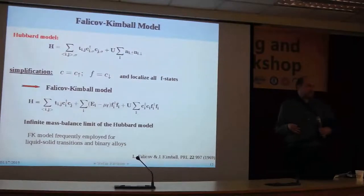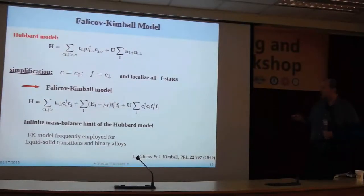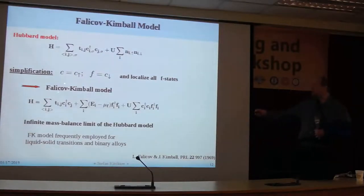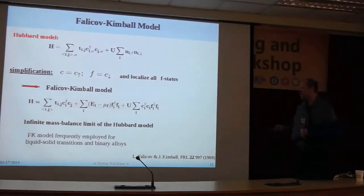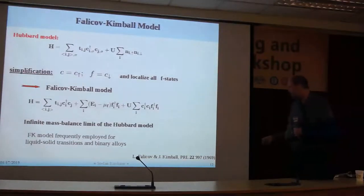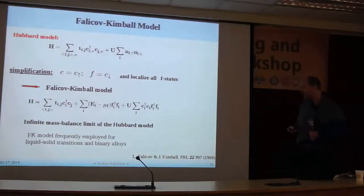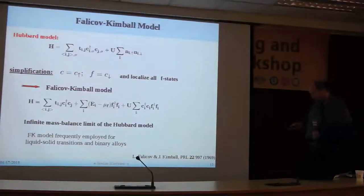I already mentioned the Falikov-Kimbell model — but what is this? If you start from the Hubbard model and make the simplification that you keep the spin-up electrons itinerant but localize all the spin-down electrons, then you arrive at the Falikov-Kimbell model. So it's the infinite mass imbalance limit of the Hubbard model. It was actually used in 1969 to describe the metal-insulator transition in Samarium Hexaboride, and it's also invoked for the description of binary alloys.